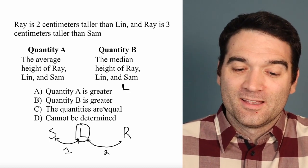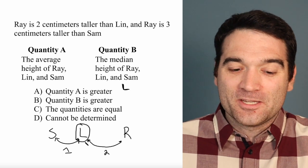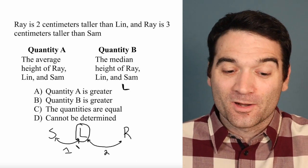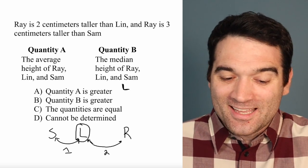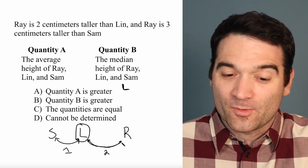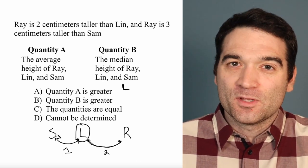Here's the question of the hour. Is the average going to be higher or lower than Lin? Well, it's going to be higher. Because Ray is 2 units, or rather 2 centimeters away from Lin, and Sam is only 1.